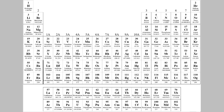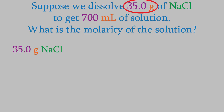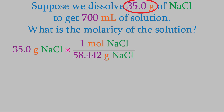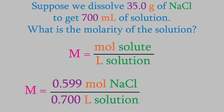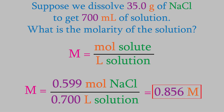For the moles of solute, we'll use the periodic table. We have 35.0 grams of sodium chloride. From the periodic table, NaCl has a mass of 58.442 grams per mole. We want the grams to cancel, so it goes in the denominator, and 1 mole goes on top. That gives us 0.599 moles of NaCl. We plug that into our formula for molarity, and we find out that we have a 0.856 molar solution. Remember, the symbol for molarity is a capital M, not lowercase — that'll be important later in this video.